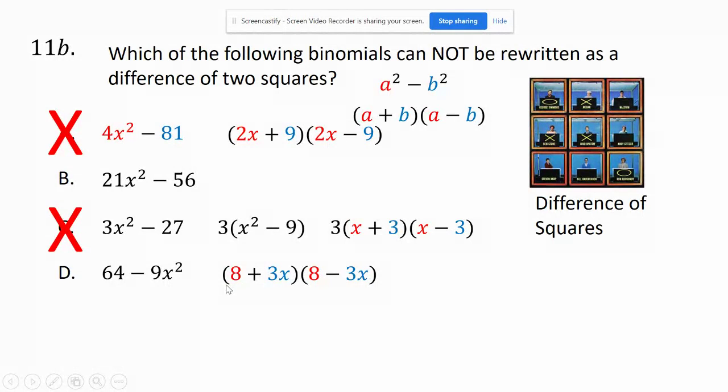21x² - 56, makes the answer B. That's the one that is not going to be written as a difference of two squares.